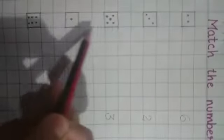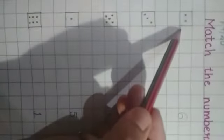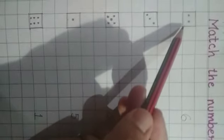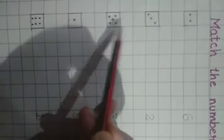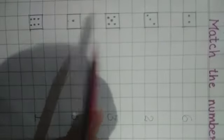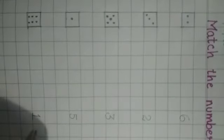Here you can see some boxes are drawn and inside that I have put dots. Some are having more dots, some are having few dots. So we have to count the dots and then we will match it with the correct number.